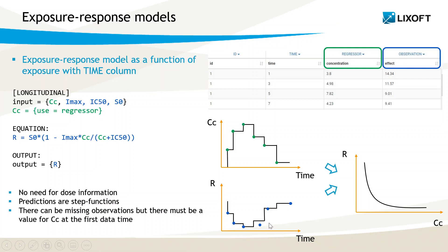With the last-carried-forward interpolation, it is possible to have missing concentration values — lines in the dataset with only a value for the response and a dot in the concentration column. However, there must necessarily be a concentration value at the first prediction time. So if the first available value for the concentration is at time 1, it will not be possible to capture an observation for the response at time 0. Since time is still used as the x-axis, individual exposure-response curves do not appear in Monolix but can be produced with post-processing of the predictions.